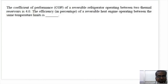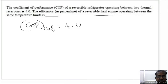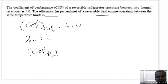COP of the refrigerator is 4.0. The efficiency of the heat engine is asked. The relationship is: COP of the refrigerator equals 1 divided by eta, minus 1.